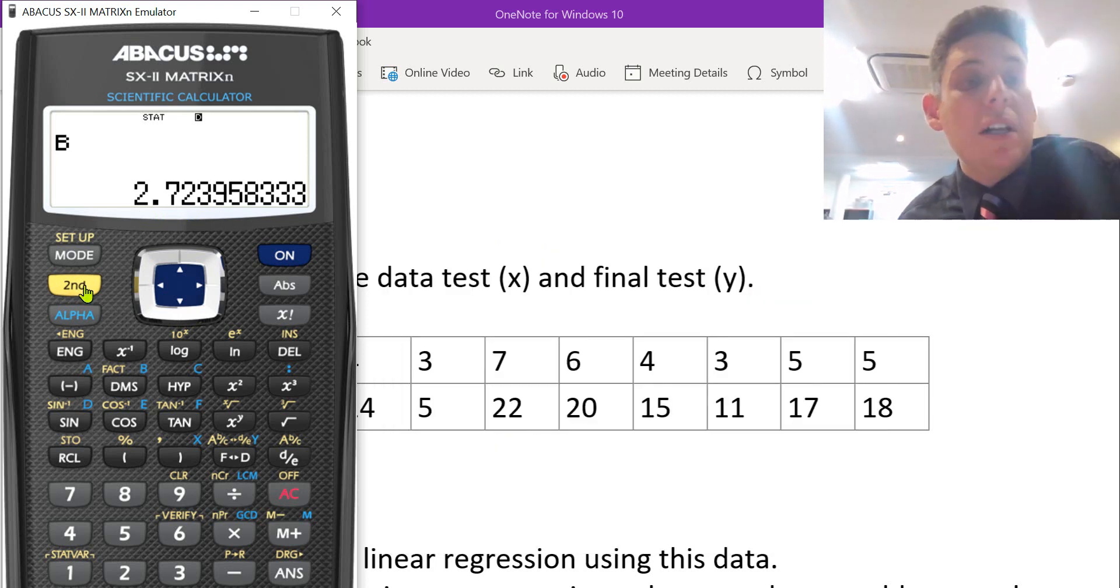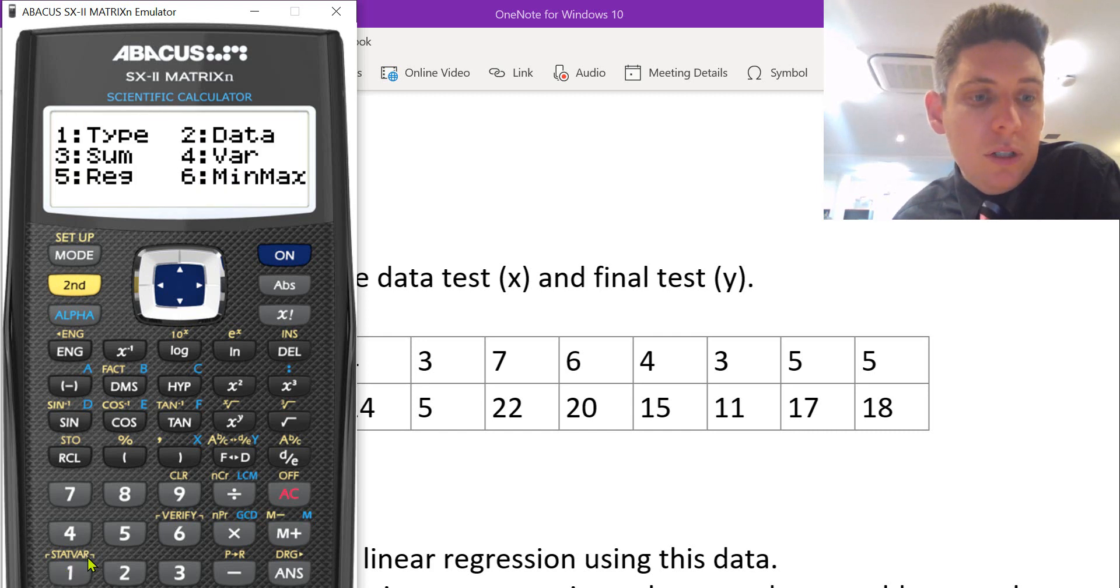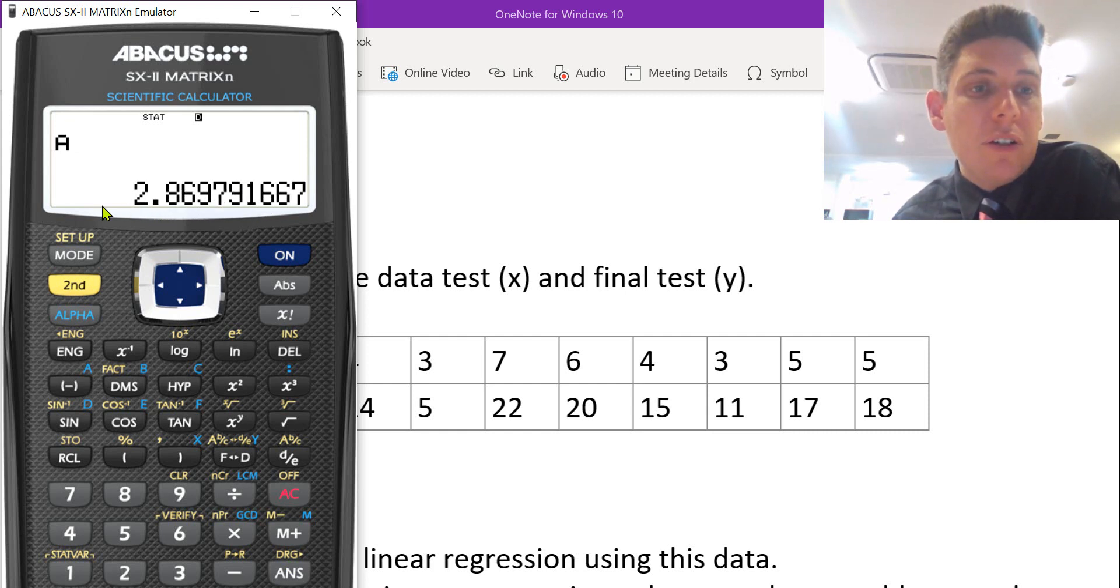Now to figure out the plus c value, if you think of y equals mx plus c, we have to go back. Y equals mx plus c, that's the m value. Just on this calculator, they call it b. So go second, variable, 5 for regression, and then press 1, equals, and that's plus c value.